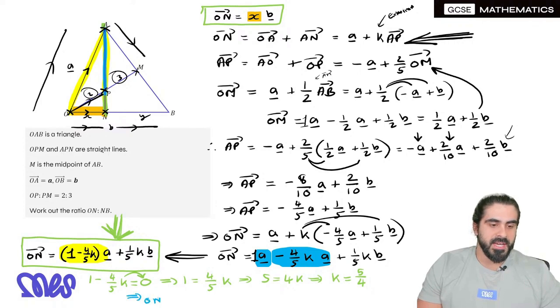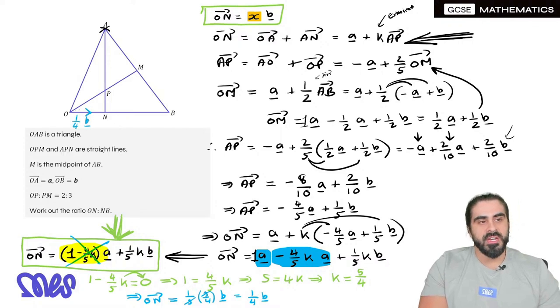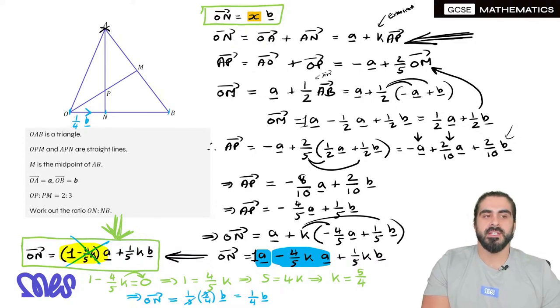So what is O to N then? Well, we've just made this equal to zero. It's one fifth K. One fifth K, we worked out to be five over four, B. While the fives cancel, we get one quarter of B. So look at the diagram. I have just proved that ON, this vector here is one quarter B. So what's the ratio of ON, NB? What must the ratio be if O to N is one quarter of the whole line? What must the ratio be?